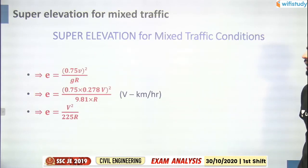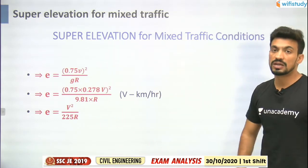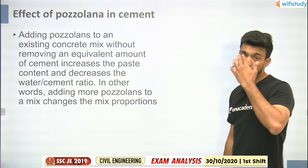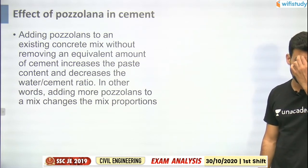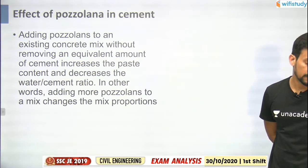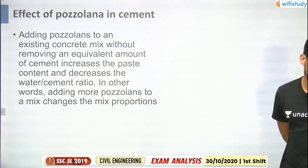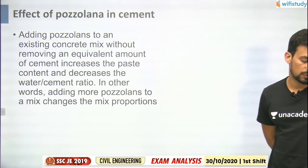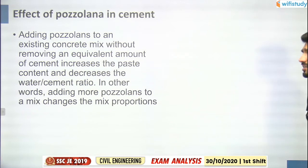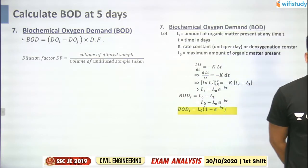For mixed traffic, the formula V²/2g was asked with symbols and numericals. For effect of pozzolana in cement: pozzolanic materials have no cementitious property on their own, but when added to cement, they develop cementitious properties. Adding pozzolanas increases paste content and decreases water-cement ratio without removing an equivalent amount of cement.